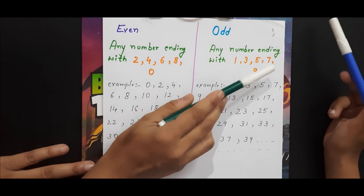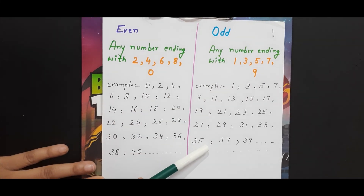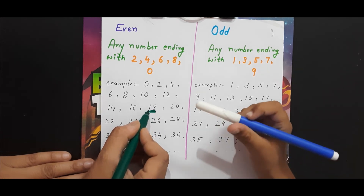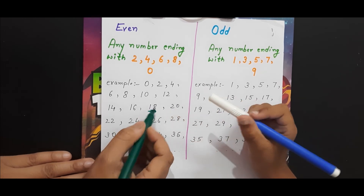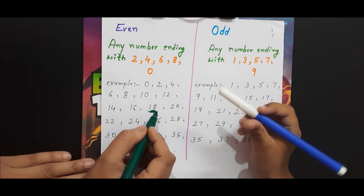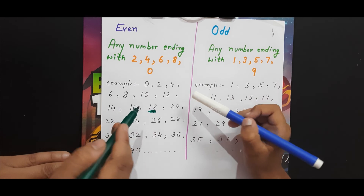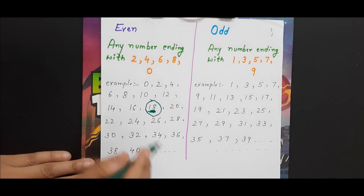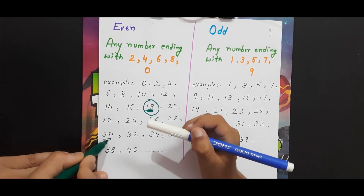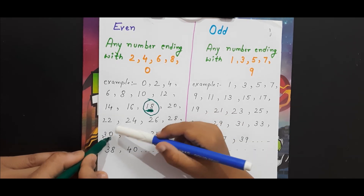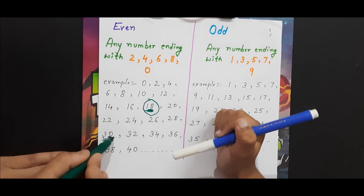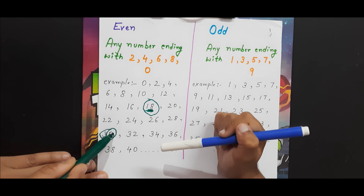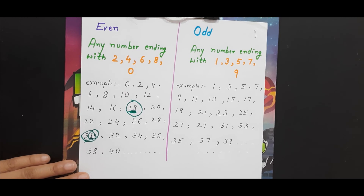Any number ending with two, four, six, eight, or zero comes under even numbers. Any number ending with one, three, five, seven, or nine comes under odd numbers. So in the number 18, what is the ending number? Eight — very good! Eight is in the even side, so the whole number 18 is an even number. Now look at 30 — what is the ending number? Zero. Zero is in the even numbers, so the whole number 30 is an even number.